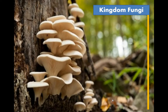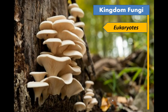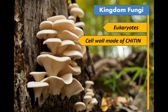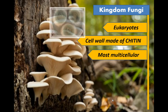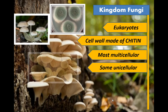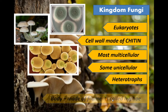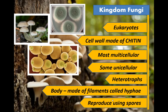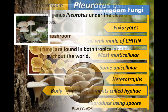When we say kingdom fungi, they are all eukaryotes, made of chitin — specifically the cell wall. They are mostly multicellular and some are unicellular. They are heterotrophs, their bodies are made from filaments called hyphae, and they reproduce using spores.